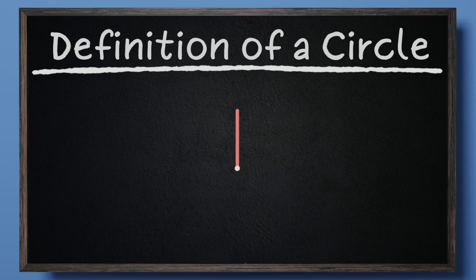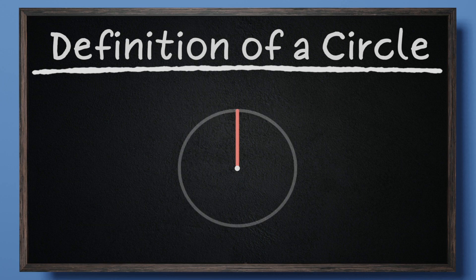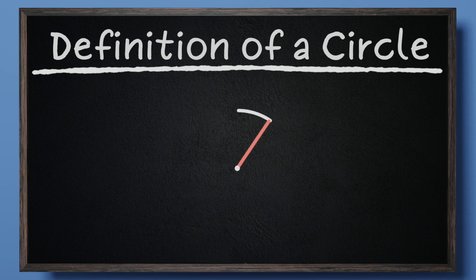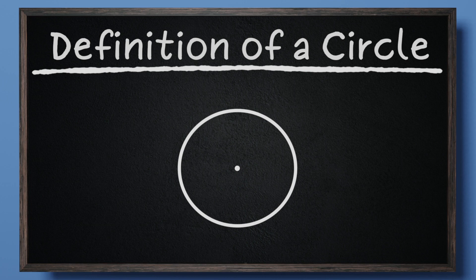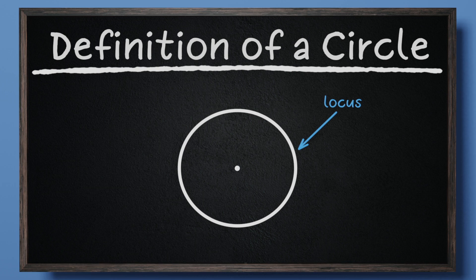One way we can see this visually is by rotating a line segment around a given center. As the line segment rotates, the end of the segment that does not lie on the center makes a curve of points. Each of these points are all equidistant from the center. This set of points is what makes our circle a circle, and this set of points is called a locus.